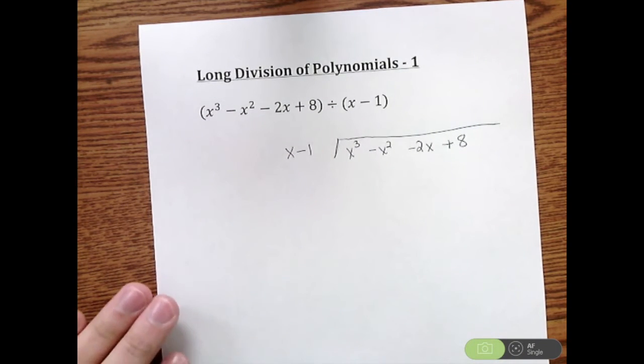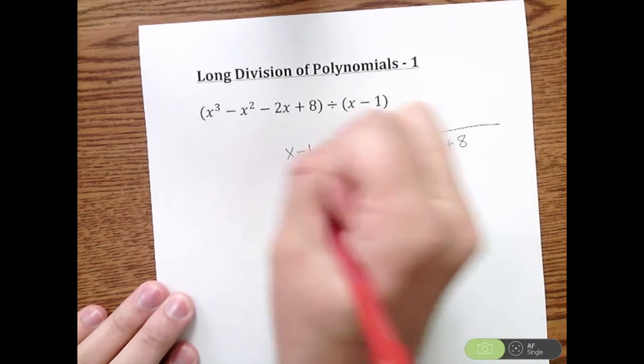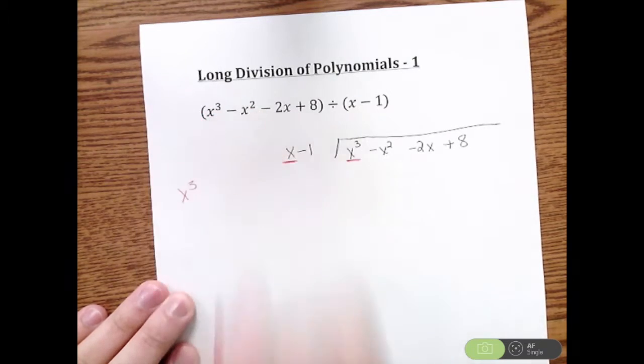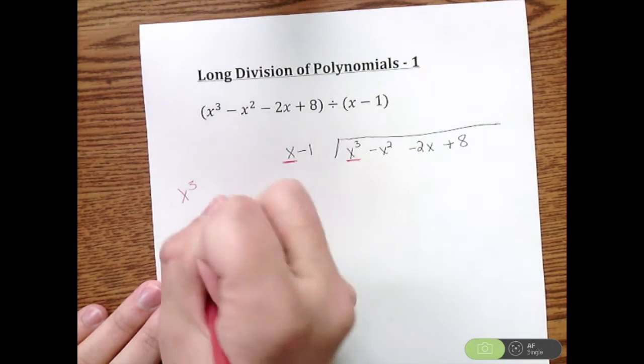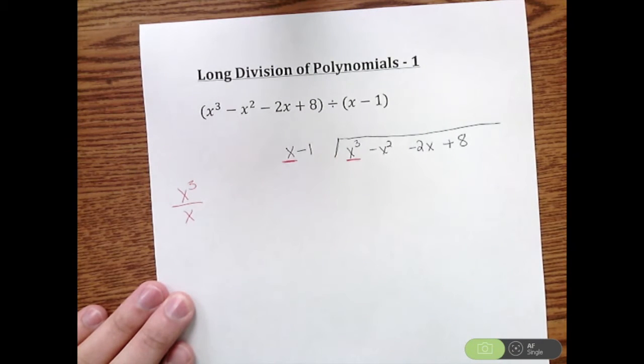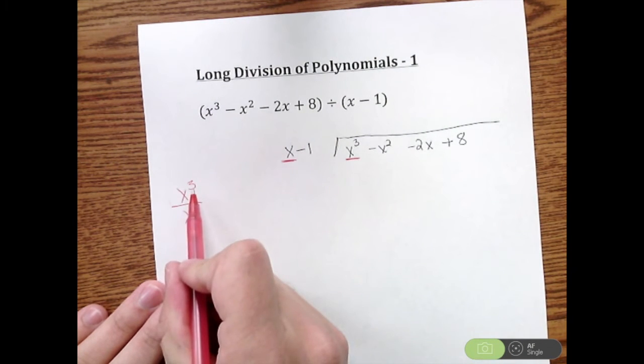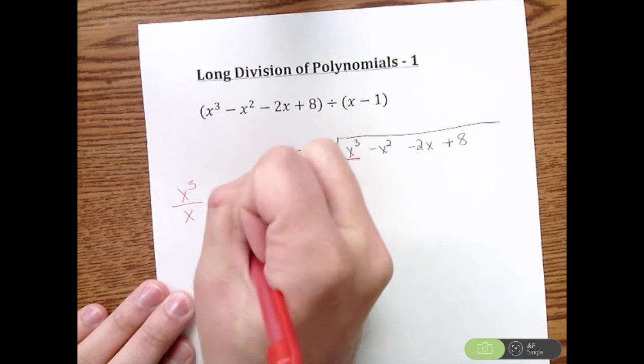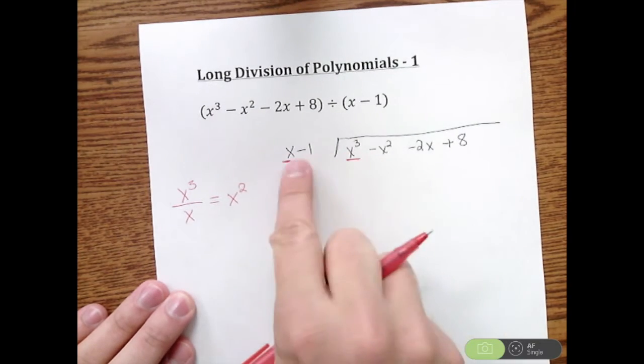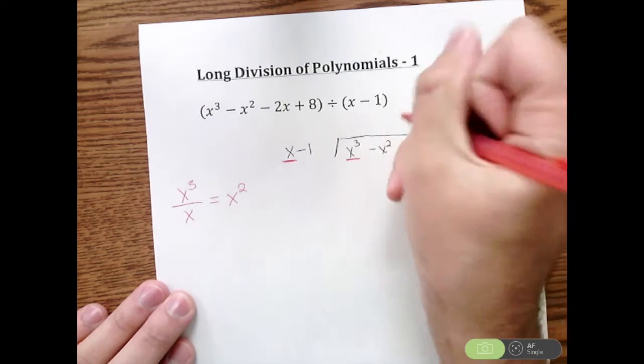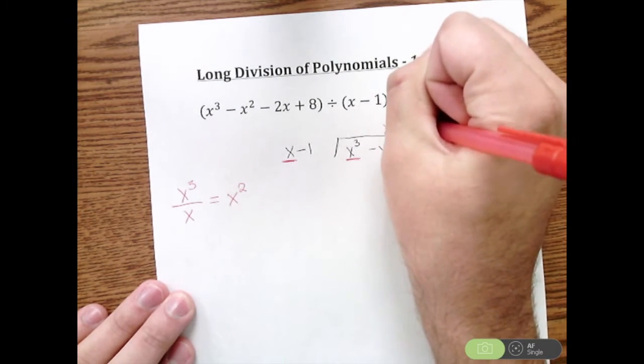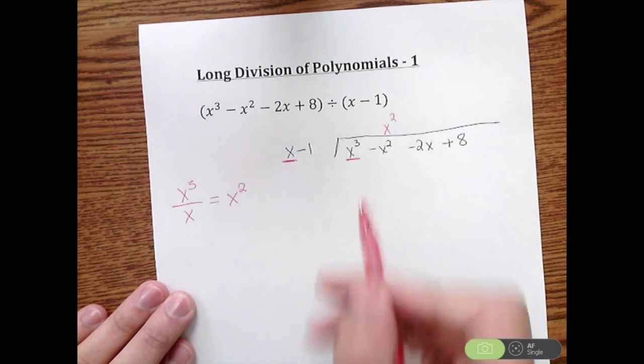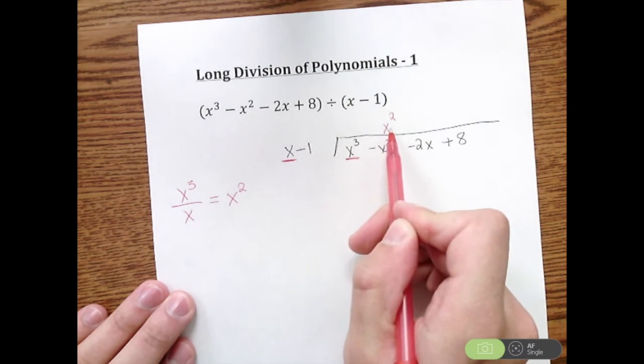So what we're going to do is start off with the first term on the inside and the first term on the outside. So we're going to do X cubed divided by X. I had three X's available, I took one away. That leaves us with X squared. So you take the first term, divide it. I'm going to line that up top with the X squared on the inside. So I took first term divided by first term, write it up top.